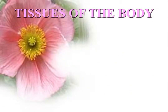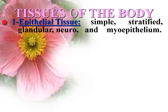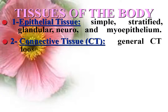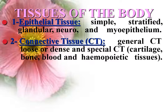Tissues of the body: body organs are made of four main tissues. Epithelial tissue may be simple epithelium, formed of one layer of cells; stratified epithelium, formed of several layers; glandular epithelium, possessing secretory activity; and neural epithelium, specialized for perception of stimuli. Myoepithelium possesses contractile activity. Connective tissue consists of cells, fibers, and matrix, classified according to the nature of the matrix.